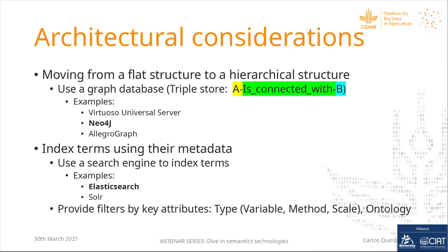There are several graph database tools available. One is called Virtuoso Universal Server, which has been around for a while. Neo4j is one of the newer technologies in graph databases, and there is also AllegroGraph. Some are open source, some are not. I am highlighting Neo4j because it is the one we selected for our ontological database.